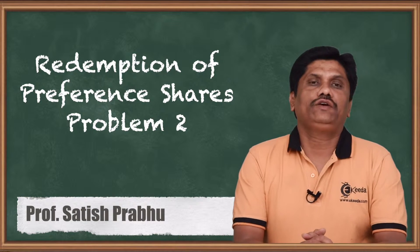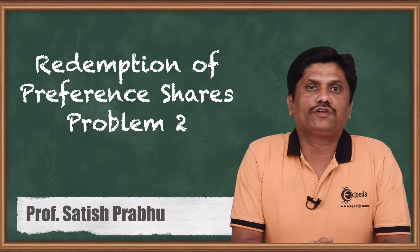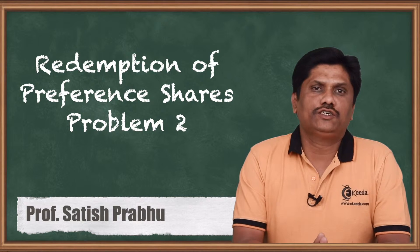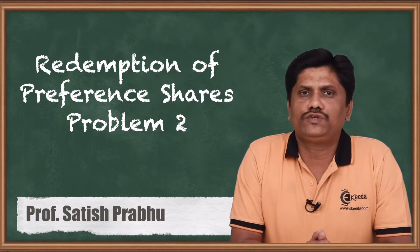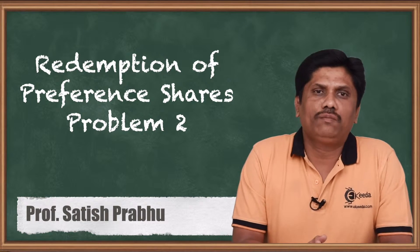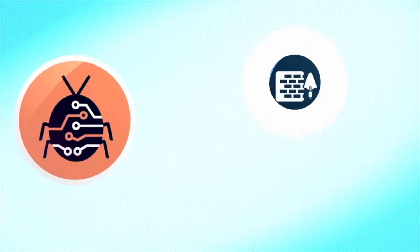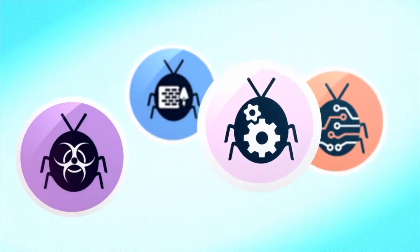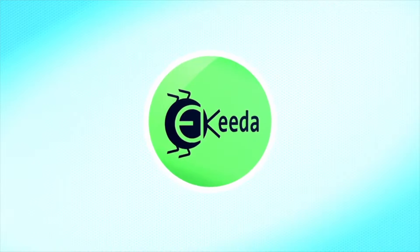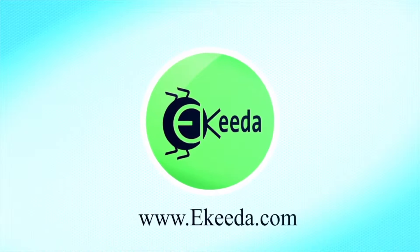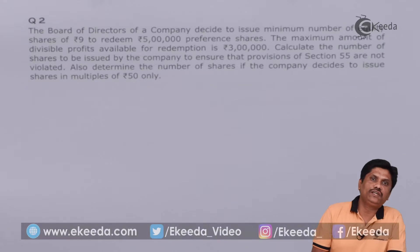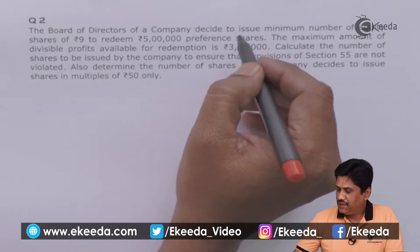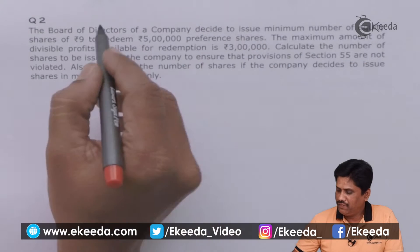Students, today we are going to learn for CA Inter accountancy subject, topic: Redemption of Preference Shares. A very small question we are going to do right now — question number two — which is on your screen right now. The board of directors of a company decides to issue the minimum number of shares.